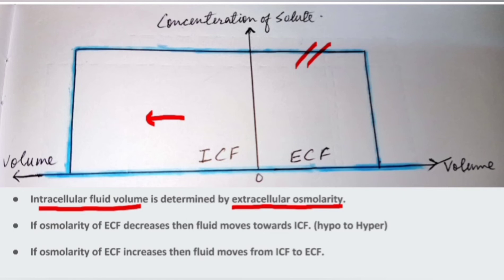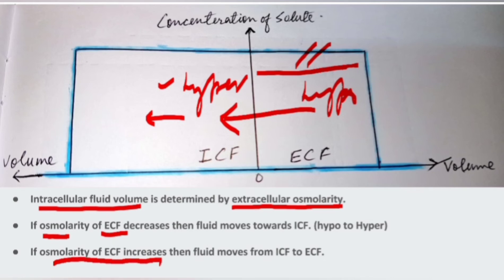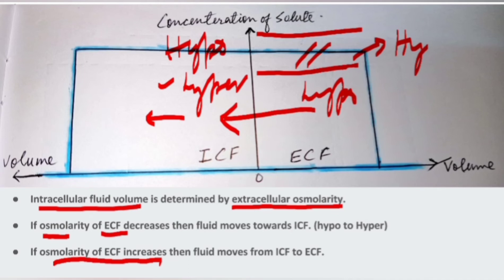If the osmolarity of the extracellular fluid decreases, the ECF becomes hypotonic and the intracellular compartment becomes hypertonic, so water moves from the ECF to the ICF. Conversely, if the osmolarity of the ECF increases, the ECF becomes hypertonic and the ICF becomes hypotonic, so fluid moves from the ICF to the ECF. This concept was studied in the previous lecture.